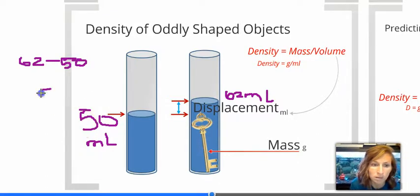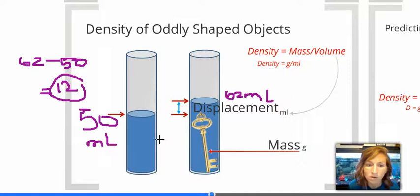We can take 62 minus 50 to get the volume of the key, which would be 12, right? Hopefully. So, the volume of that key would technically be 12 milliliters. Or, generally speaking, if we're talking about a solid object, we usually like to use centimeters cubed as our unit of measure.